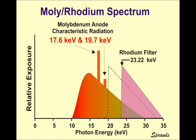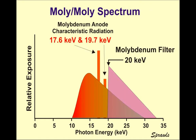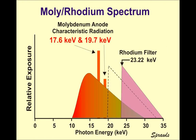The molybdenum-molybdenum combination would be used for a smaller breast. If we move towards a medium-sized breast, we want a little more energy in our X-ray beam. The filter we use in that case is rhodium. Rhodium has a K-shell energy cutoff of about 23 keV, which determines where it filters effectively — it is a good filter for energies of 23 keV and above. We're still using a molybdenum target, so the characteristic radiation doesn't change; we just stop filtering those extra 20 keV photons.